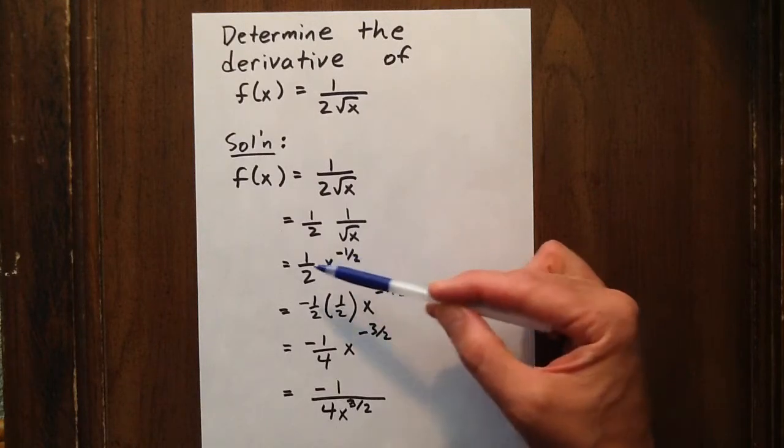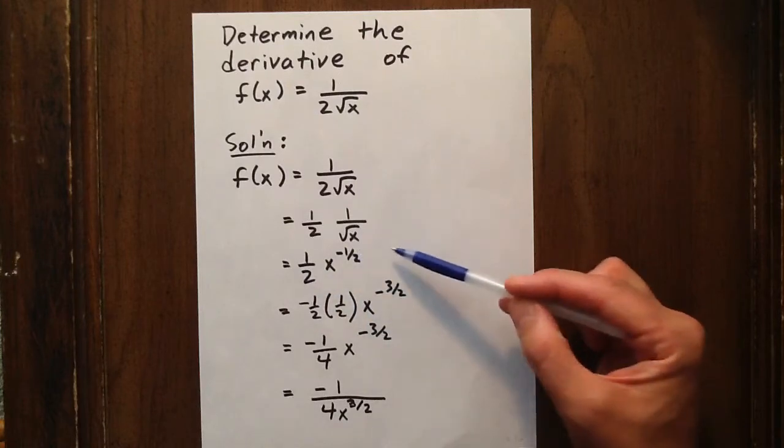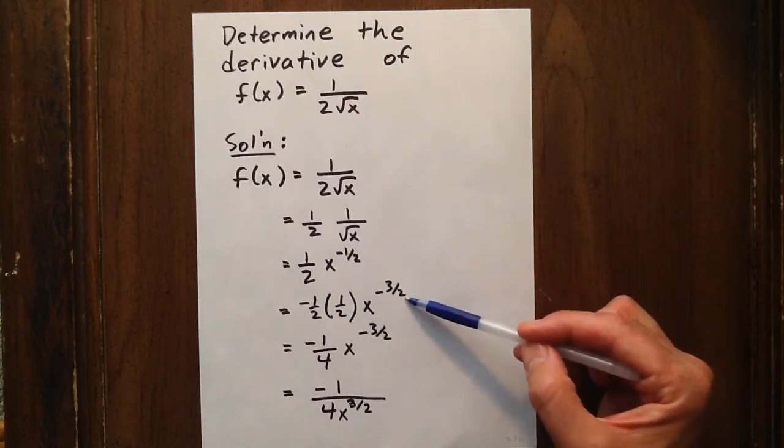At this point we can multiply our exponent by the coefficient and subtract 1 from the exponent. And that's what we do in the next line.